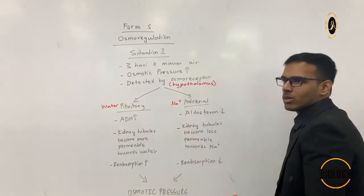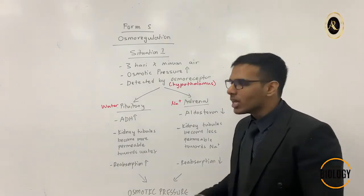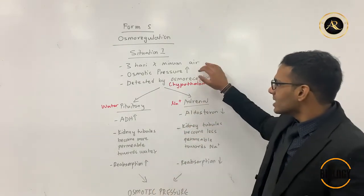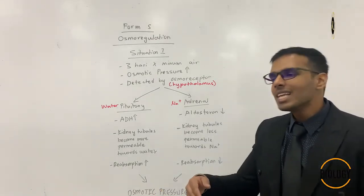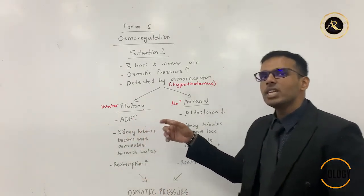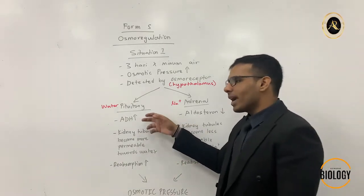Pituitary gland is responsible for water, adrenal gland is responsible for sodium ion. So what pituitary gland will do: the moment it realizes the water level is low and the osmotic pressure is high, it will increase the level of ADH, anti-diuretic hormone.